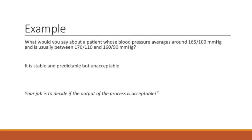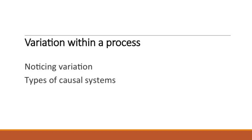Let's use another example. What would you say about a patient whose blood pressure averages around 165 over 100 and is usually between 170 over 110 and 160 over 90? You might say that this is a stable process and it's very predictable, but you would also say that this is an unacceptable range for blood pressure. Your job is to decide if the output of the process is acceptable. Now we're going to talk about variation within a process and types of causal systems.